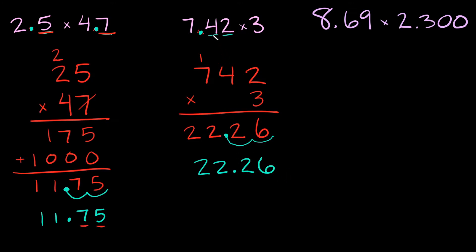So when we go back to our problem remember we had two decimal numbers in total. So that means we should have two decimal numbers in our answer in total which is exactly what we have. So we know it's right. Let's do one more example. So we have 8.69 times 2.300.